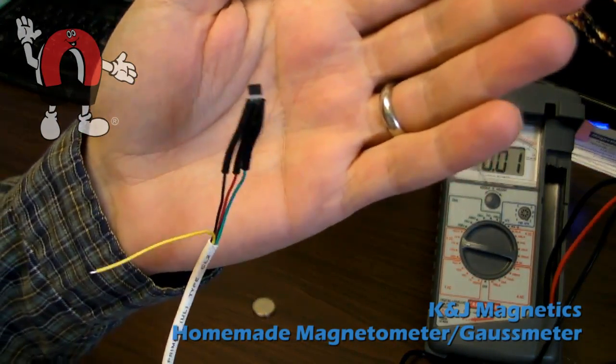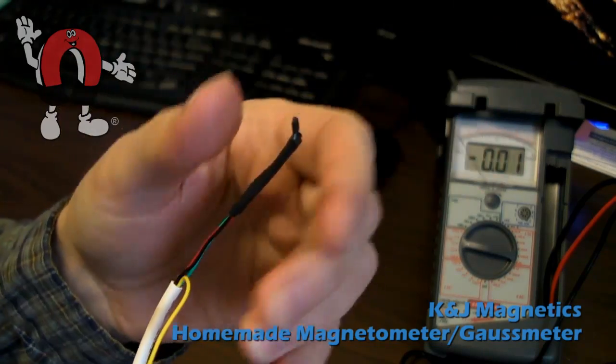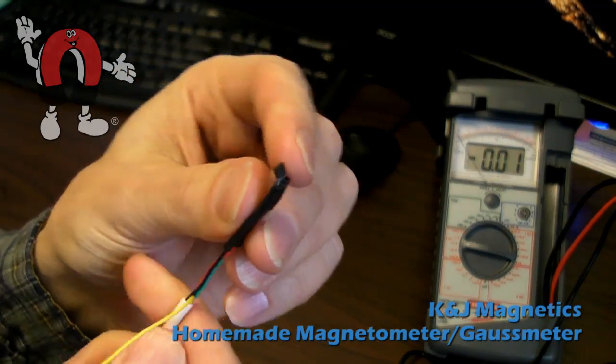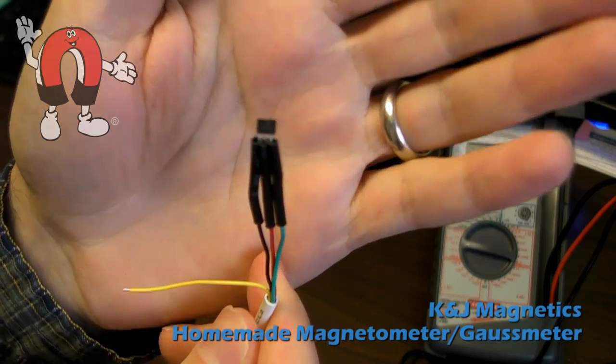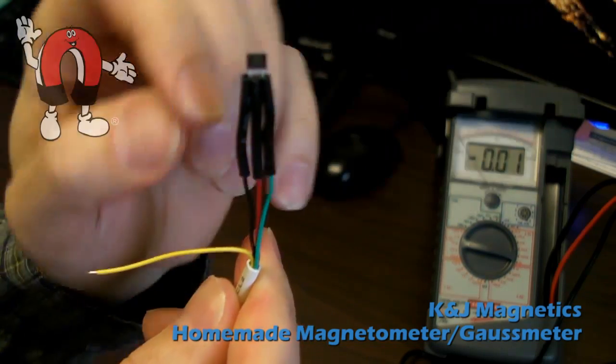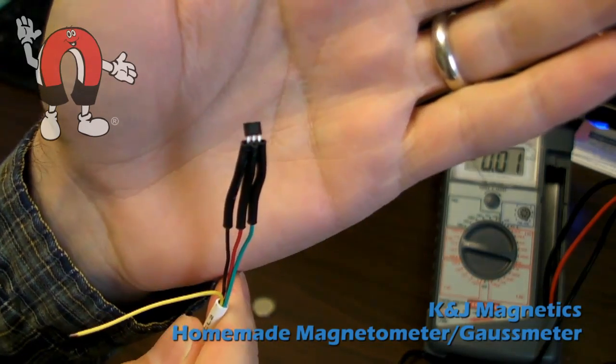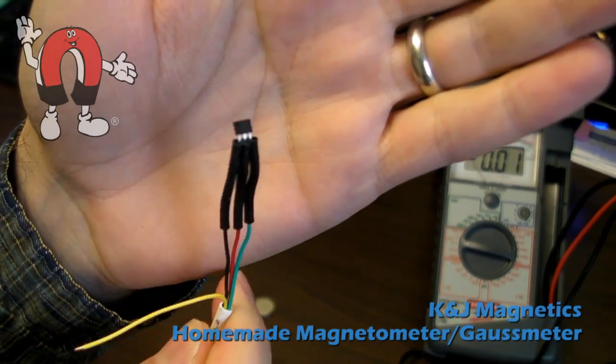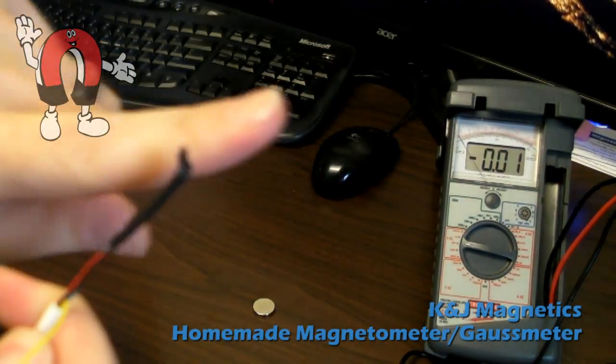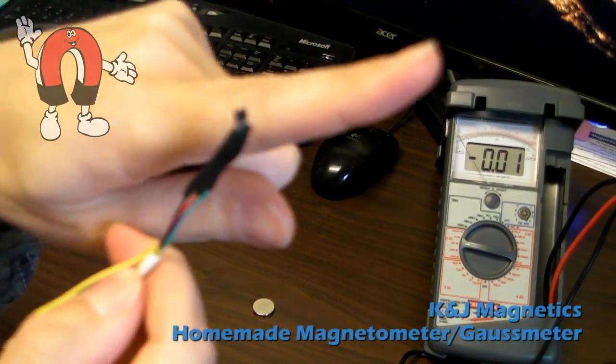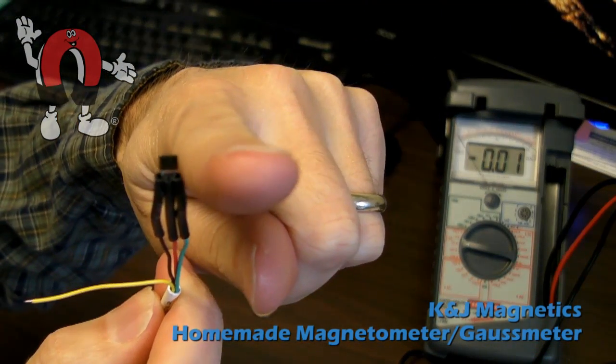Here's the sensor end of our makeshift magnetometer. That's the Allegro sensor. On the end you can see three wires: ground, power, and the signal out. This little sensor is sensing the magnetic field through it in this direction, in the way that I'm pointing.